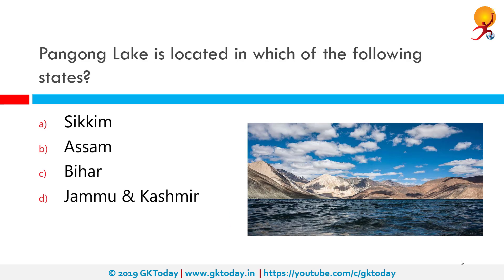Pangong Lake is located in which among the following states? The correct answer is Jammu and Kashmir. Pangong Tso, Tibetan for high grassland lake, also referred to as Pangong Lake, is an endorheic lake in the Himalaya situated at a height of about 4350 meters. It is 134 kilometers long and extends from India to China. Approximately 60% of the length of the lake lies in China, and the lake is 5 kilometers wide at its broadest point.